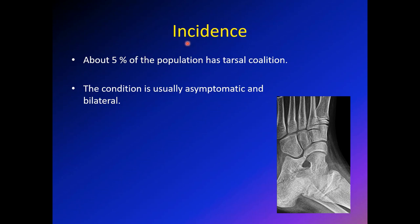What is the incidence of this condition? This is a fairly common condition — 5% of the population have some sort of tarsal coalition. However, the vast majority of cases are asymptomatic and bilateral, as you can see here: X-rays taken for a different reason show an abnormal connection in the oblique view between the calcaneus and the navicular. Most cases are discovered accidentally when taking an X-ray for other reasons.